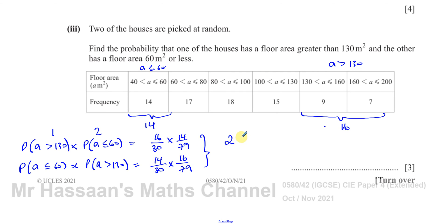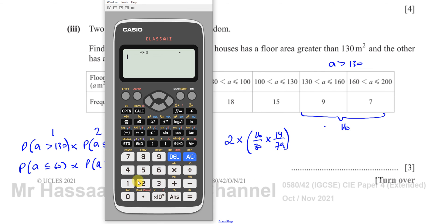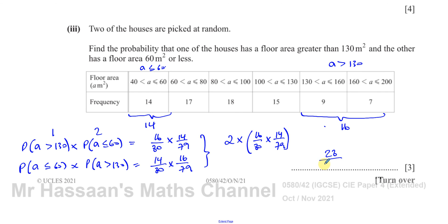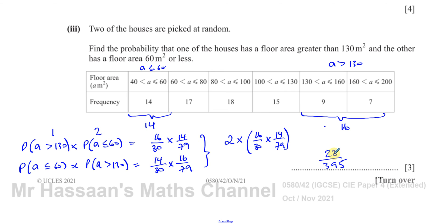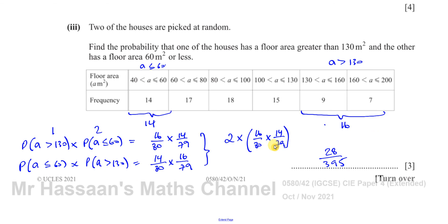Since there are two identical outcomes, we compute 2 × (16/80) × (14/79). Entering into the calculator: 2 × 16/80 × 14/79 = 28/395. It's best to leave that as a fraction since it doesn't round nicely. So 28/395 is the answer to part three, completing question two from the October/November 2021 Paper 4 Variant 2.